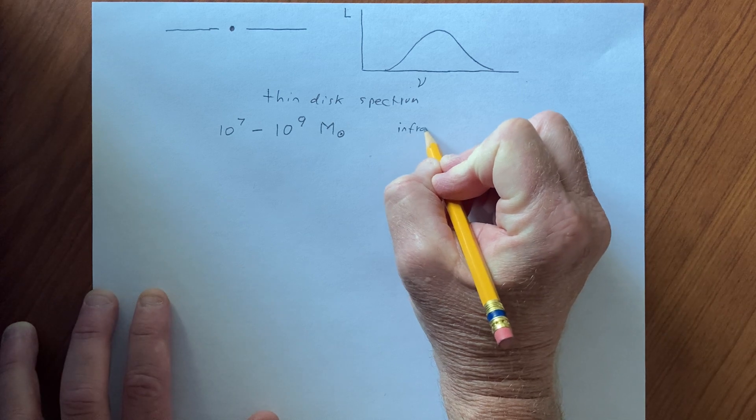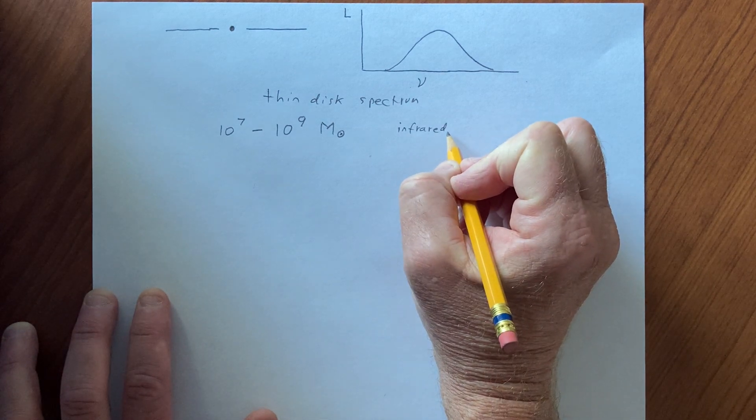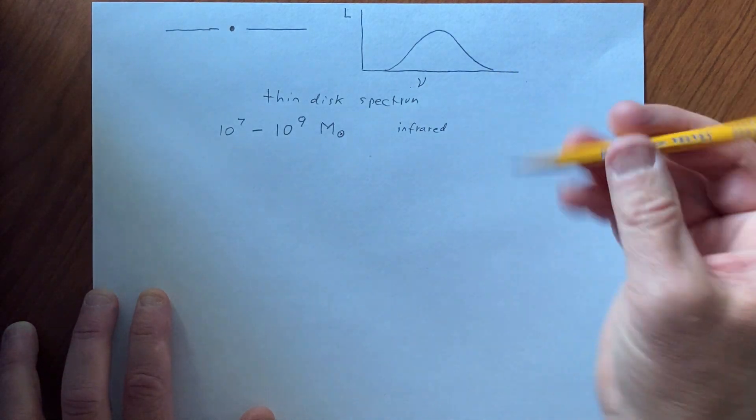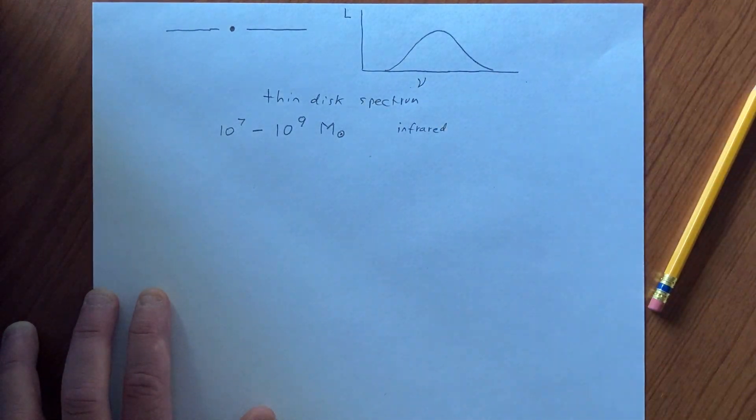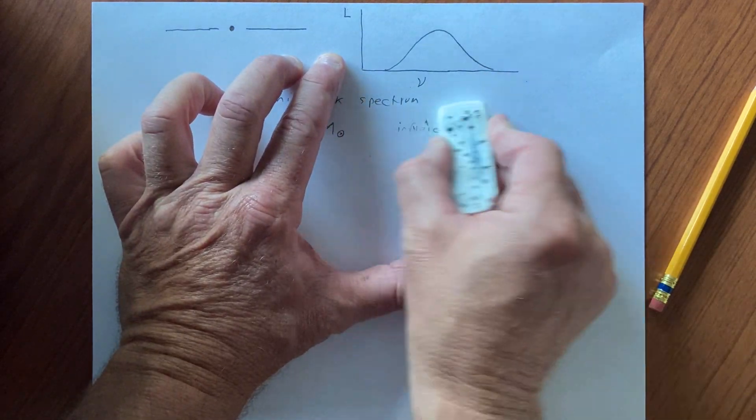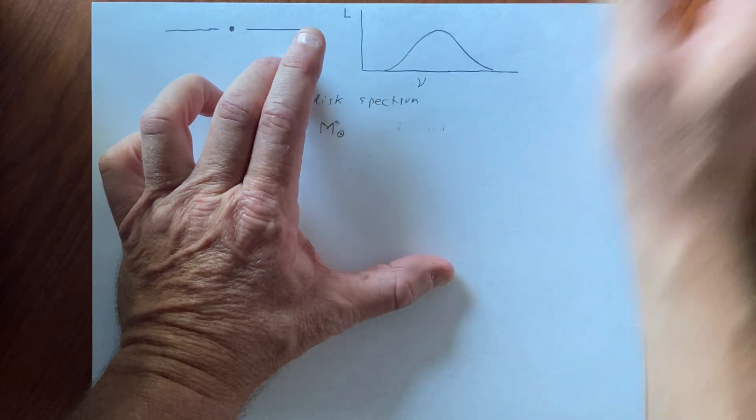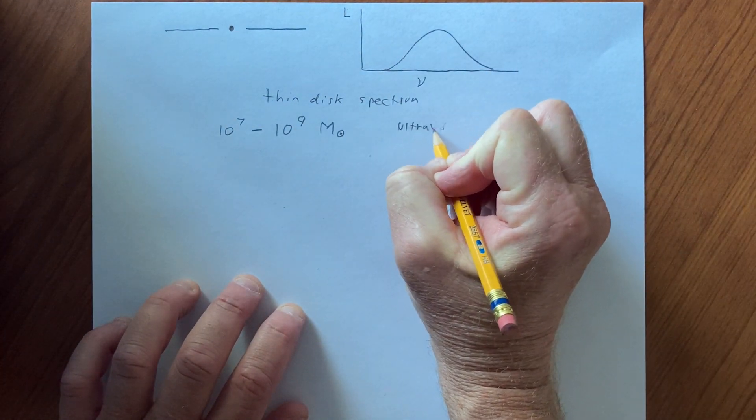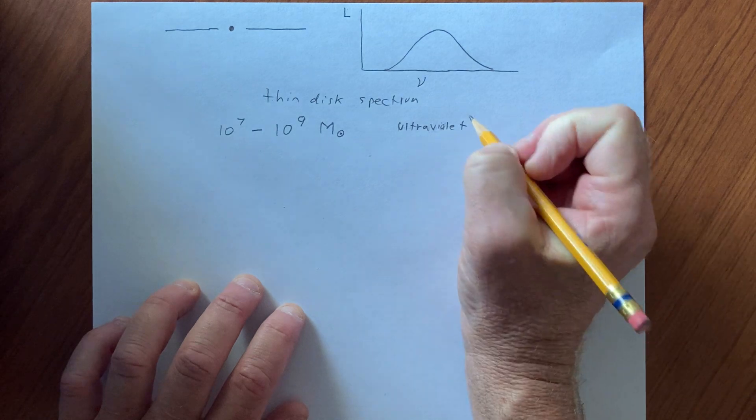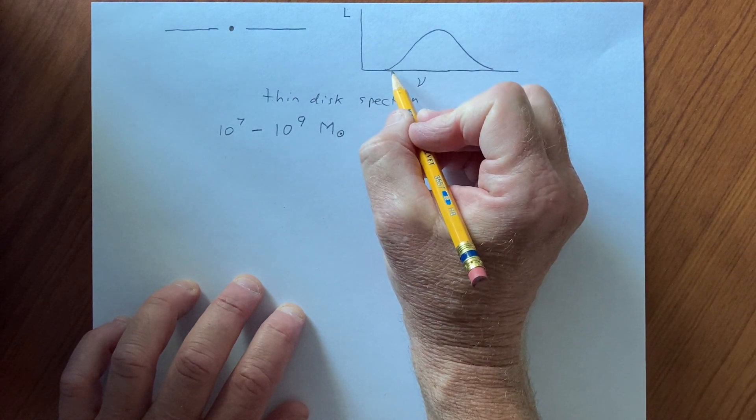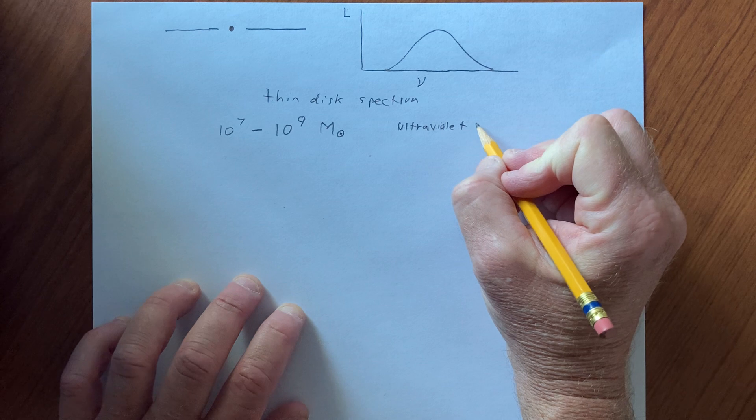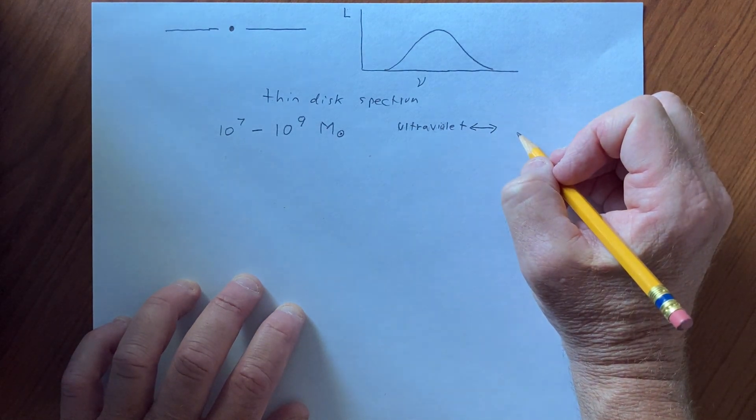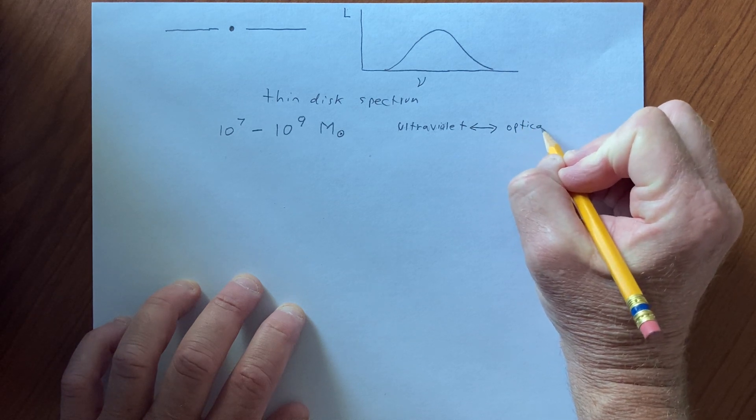We are talking about emission in the inner regions, which are in the ultraviolet. So the higher energy limits don't quite get to x-rays, ultraviolet. The lower frequencies further out are in the optical. They get as low as the optical.